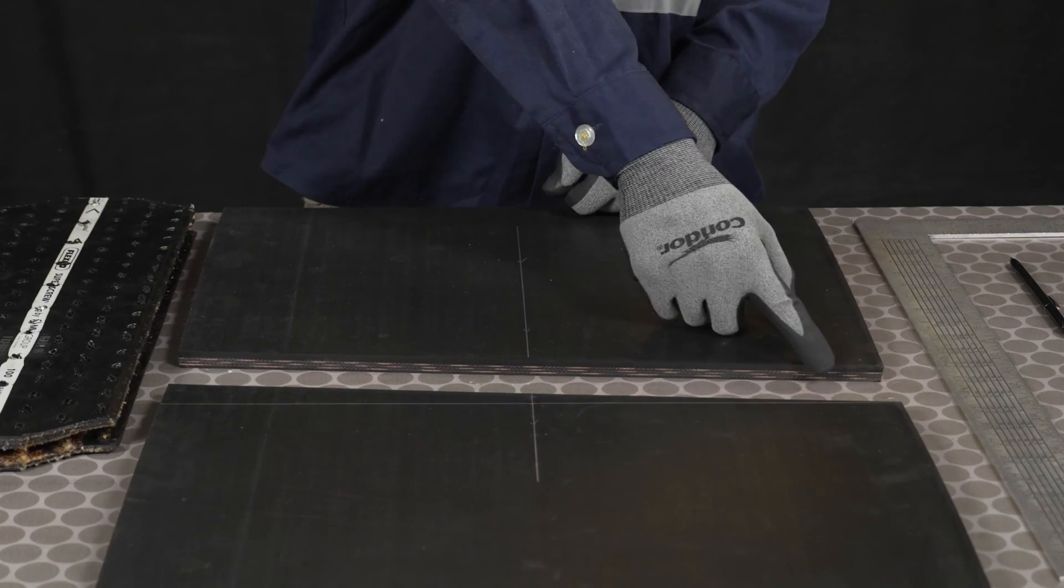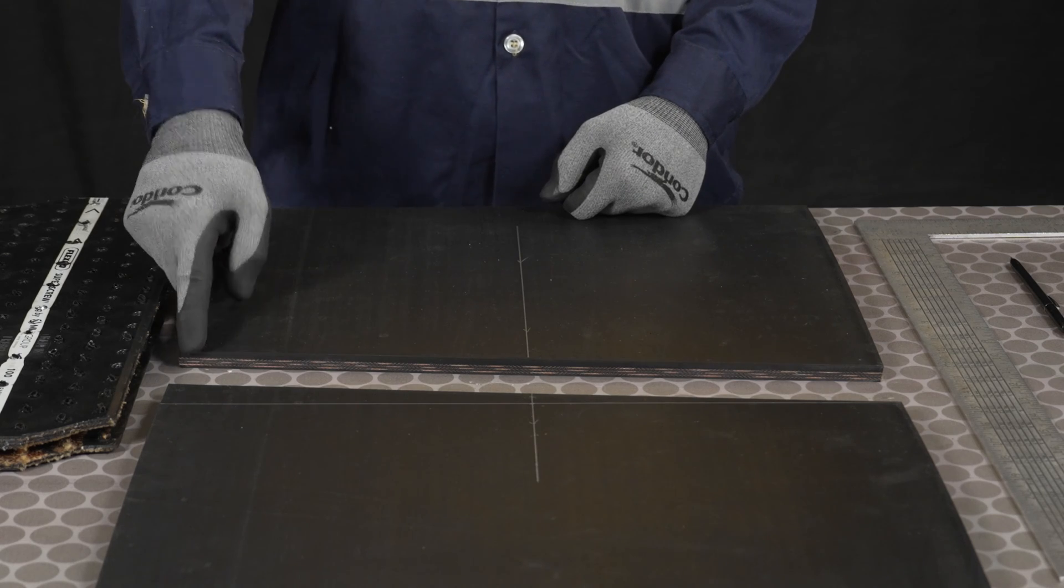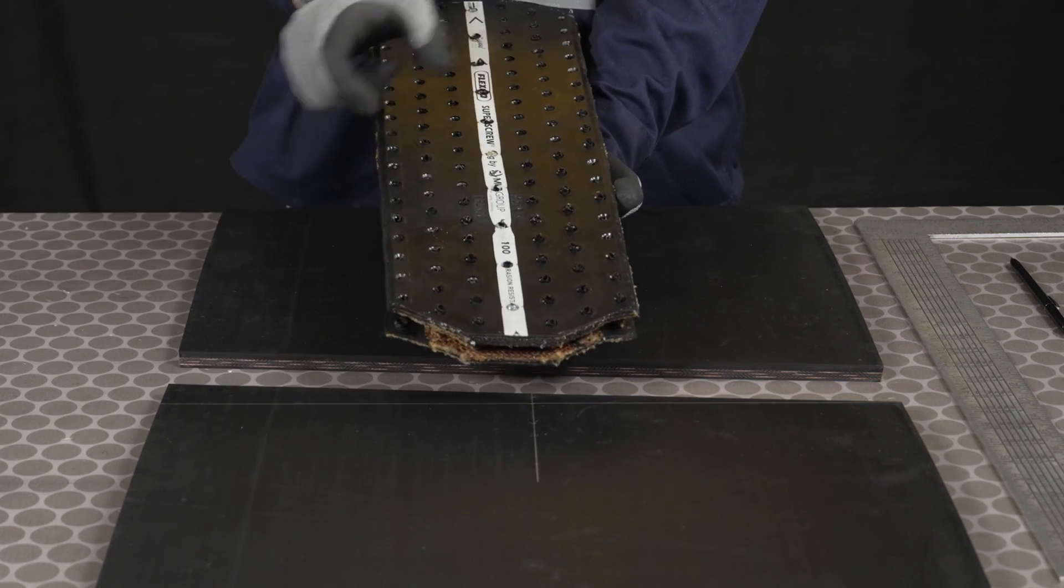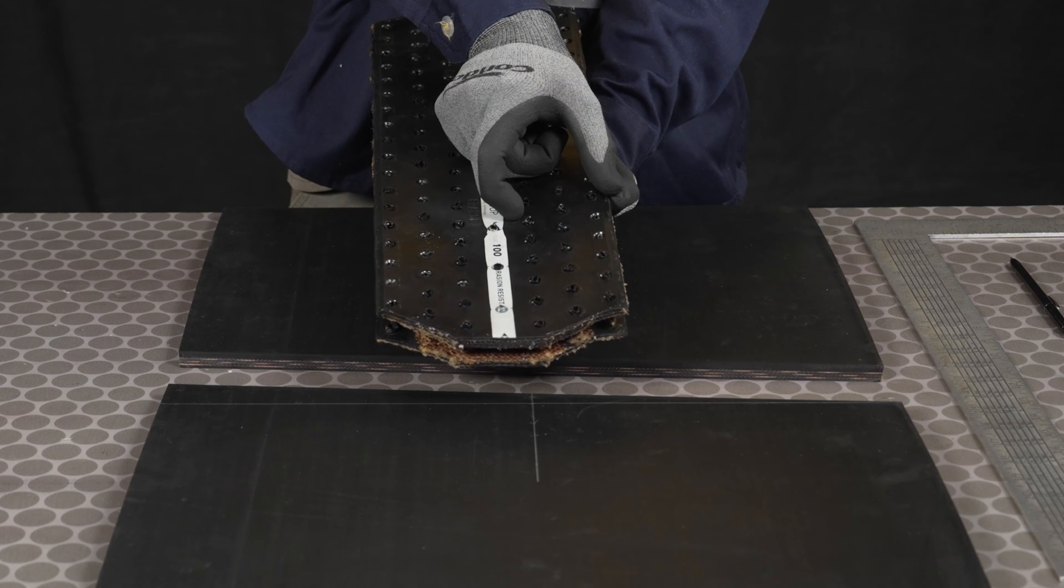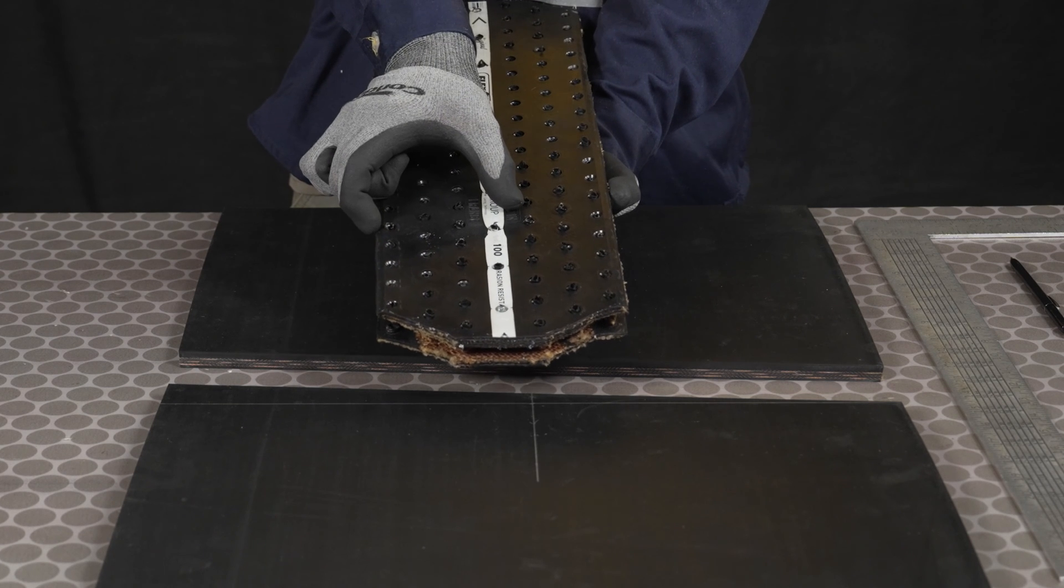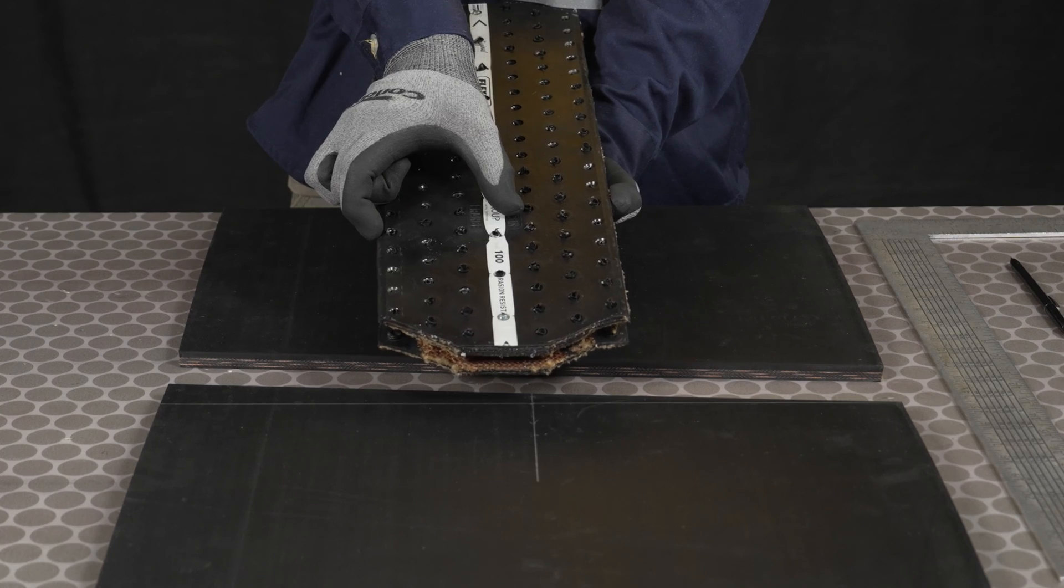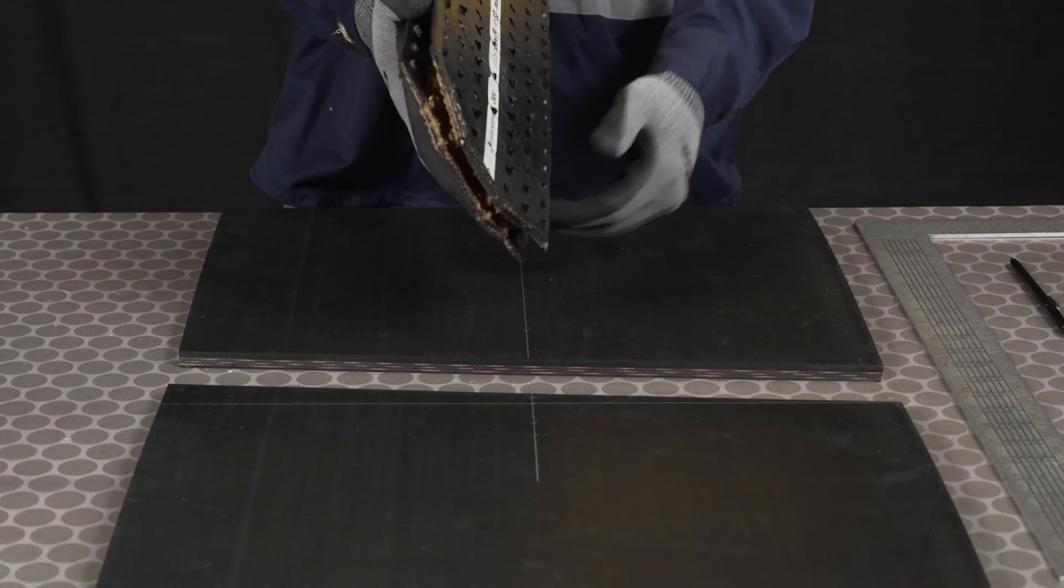When the belt is cut, determine the distance to skive on each belt end. Note that the measurement will be different on each belt end for Super Screw Original. It does not matter whether the short side skive distance is on the leading or trailing belt end.